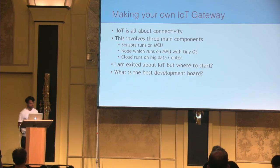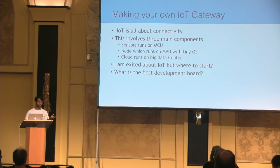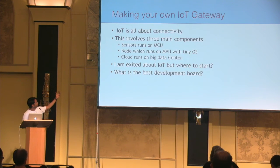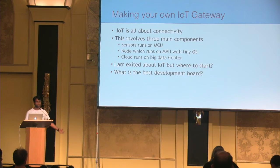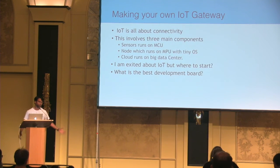IoT involves three basic components. First, a sensor running on a microcontroller that senses data — temperature, pressure, whatever it is. Second, a node device running on a MIPS-based or RAM-based processor with a small operating system to control it. Third, a cloud backend that manages all the sensors and instructs them according to the program written.